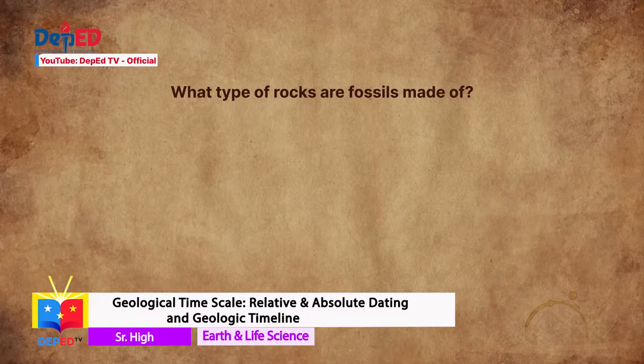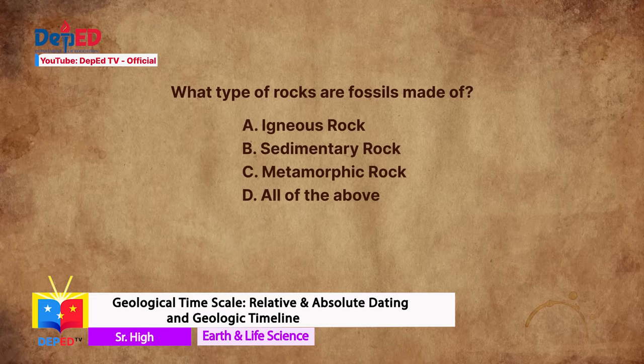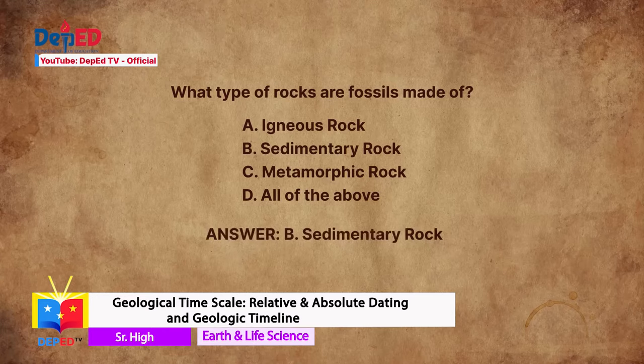What type of rocks are fossils made of? A. Igneous rock. B. Sedimentary rock. C. Metamorphic rock. D. All of the above. The answer is B. Sedimentary rock. Am I right? Cool!